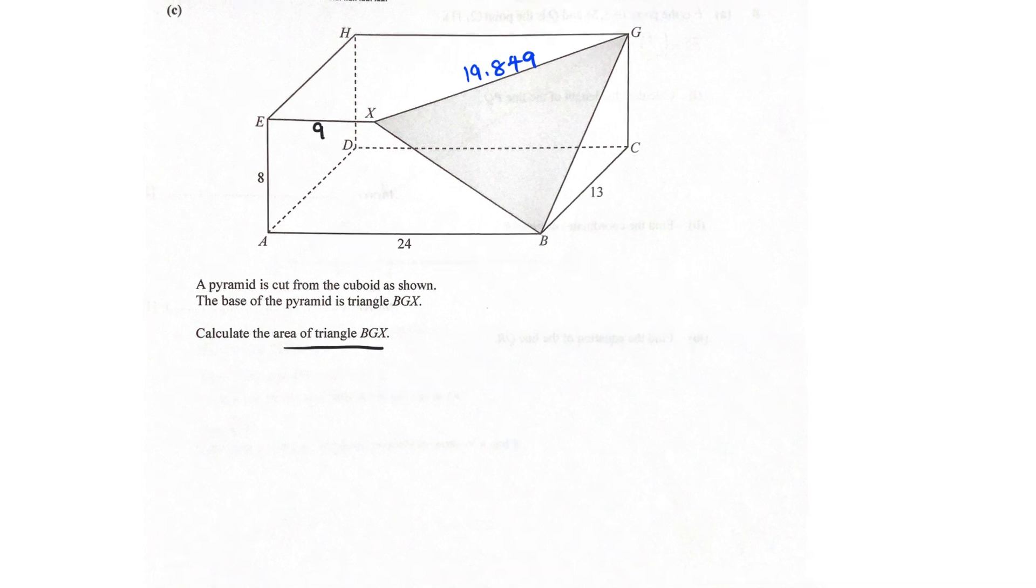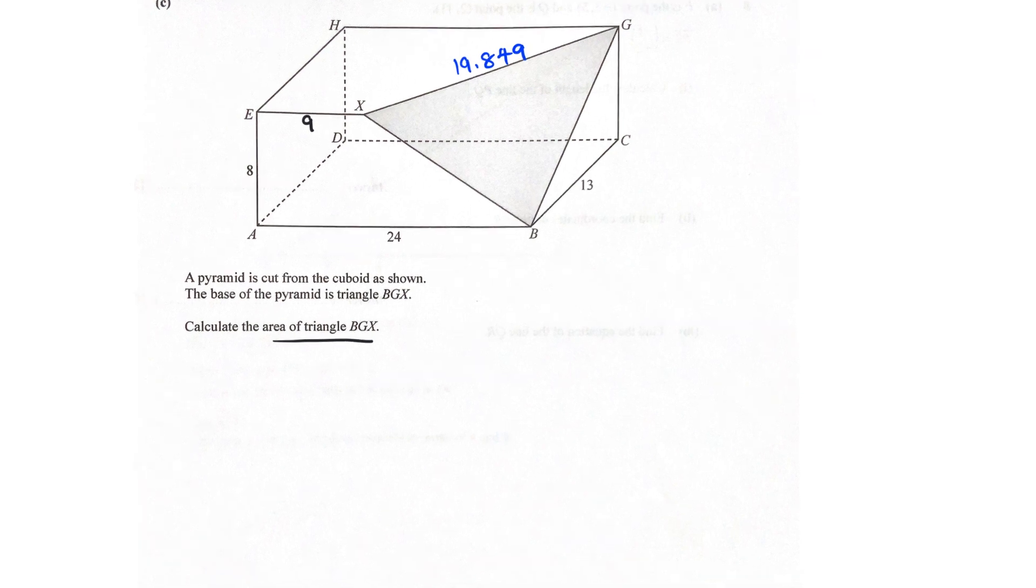So, 5 marks, guys, a few parts. We have a triangle with, we only currently have one length known, XG, and we want to find the area. Clearly this is not the right angled triangle, so clearly we need to use the Trigo formula, or rather the other formula of area of triangle, half AB sine C. We need two sides and one angle.